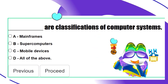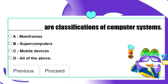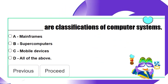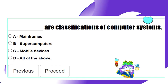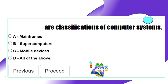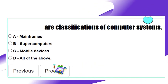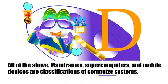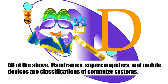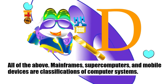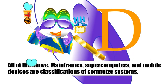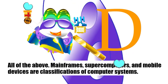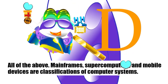Blank are classifications of computer systems. All of the above — mainframes, supercomputers, and mobile devices — are classifications of computer systems.